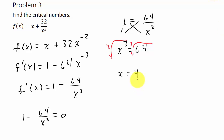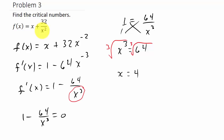So x equals 4 is a critical number. Notice the derivative is undefined at 0, but in this problem 0 is not a critical number because 0 is not in the domain of the function — the function is also undefined at 0. So our only critical number is x equals 4. Hopefully this video helped — don't forget to like and subscribe!